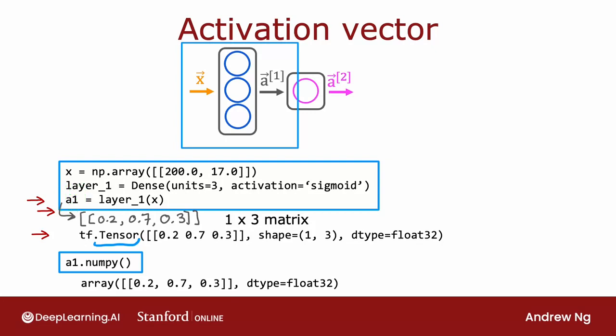And in fact, if you want to take A1, which is a tensor and want to convert it back to a NumPy array, you can do so with this function, a1.numpy, and it will take the same data and return it in the form of a NumPy array, rather than in the form of a TensorFlow array or TensorFlow matrix.